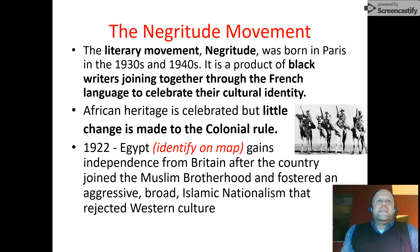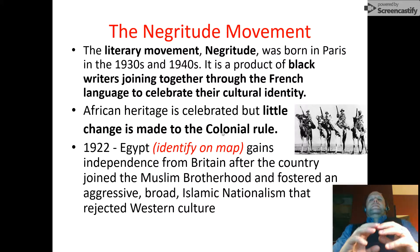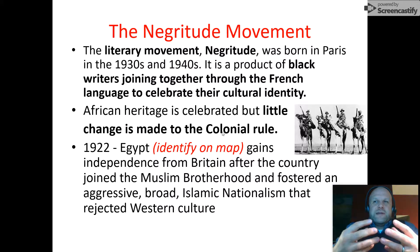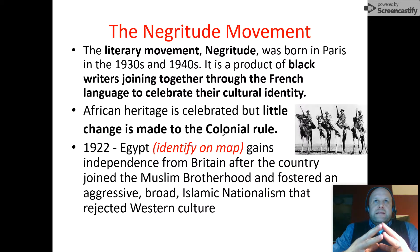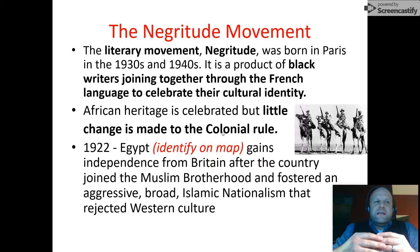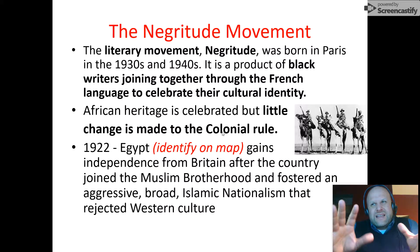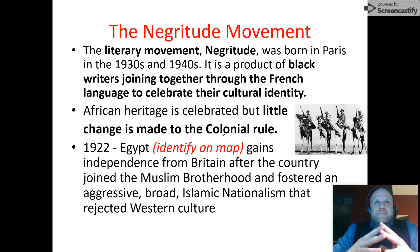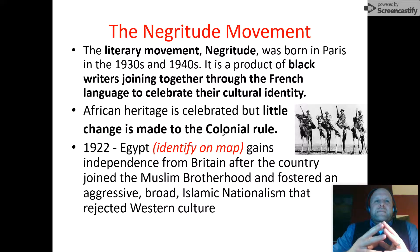There was a question about what the Negritude movement is. It was a movement born in Paris in the 1930s and 40s, a product of Black writers joining together — kind of like the movement in the United States. African heritage was celebrated, similar to a worldwide Harlem Renaissance. It parallels the Harlem Renaissance in the United States, but little change was made to colonial rule.